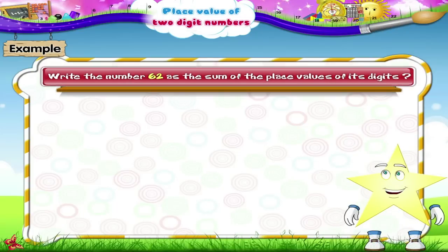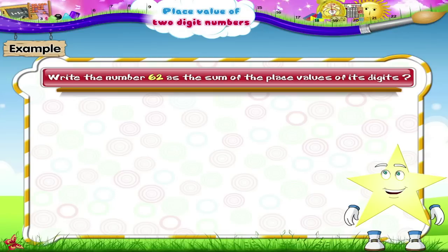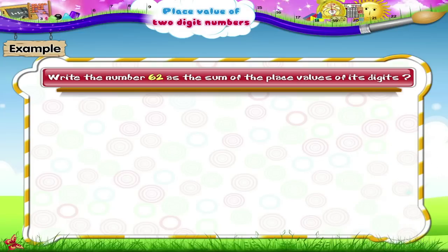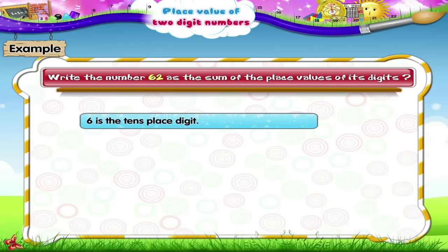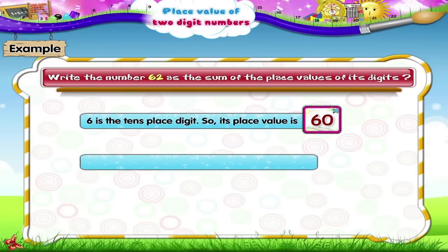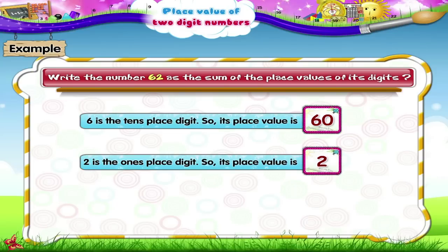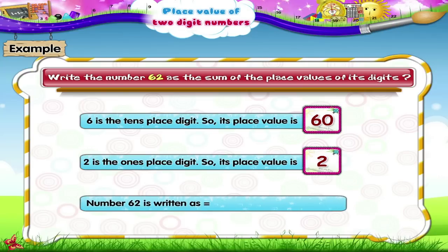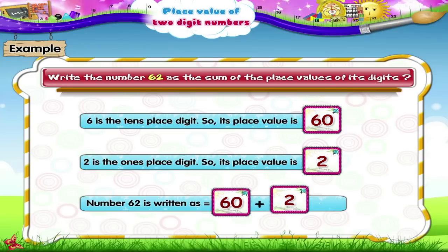Now can you write the number 62 as the sum of the place values of its digits? In the number 62, the digit 6 is the tens place digit, so its place value is 60. The digit 2 is the ones place digit, so its place value is 2. Hence the number 62 is written as 60 plus 2.